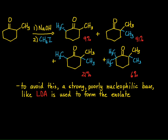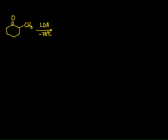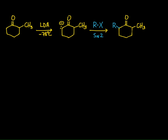LDA can form the enolate, and we can actually control the regioselectivity of that process. At low temperatures, LDA typically deprotonates the less hindered alpha carbon because of its bulkiness. Therefore, if we run this reaction taking 2-methylcyclohexanone and reacting it with LDA at minus 78 degrees, we form only one enolate — removing an alpha hydrogen on the left-hand side because it's less sterically hindered. Reacting that with an alkyl halide gives only the 5-alkylated position.